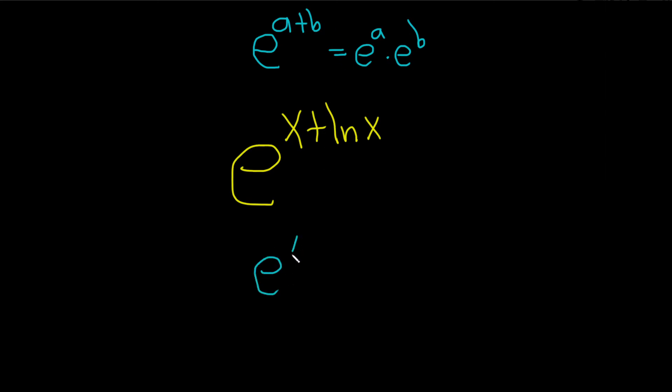This will be e to the x times e to the natural log of x, right? So if you multiply these you end up adding the exponents.